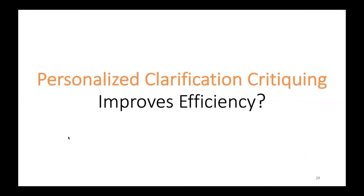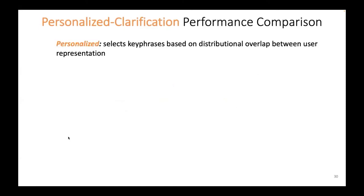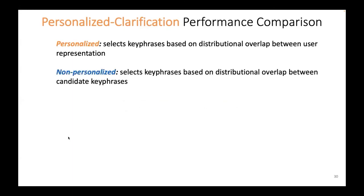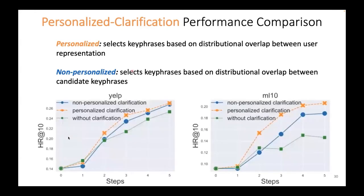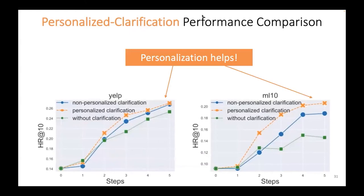For personalized clarification critiquing, we compare three workflows: personalized clarification that selects keyphrases based on distributional overlaps between the user representations; non-personalized that selects keyphrases based only on distributional overlap between candidate keyphrases; and pure critiquing without a clarification step. The clarification-enhanced conversations consistently outperform critiquing-only conversations, and personalization really helps. This suggests that the selection of clarification queries should ideally take into account the user's preference history.